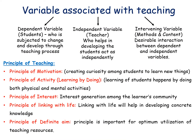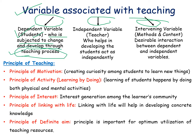Moving on to the variables associated with teaching — there are three variables in the teaching procedure. The first variable is the dependent variable, which is the student, who is subjected to change and develops through teaching processes. The student can become successful in life. The second is the independent variable, which refers to the teaching method and representation used. The third is the intervening variable — the methods and contents we use — to guide interactions between the dependent and independent variables.